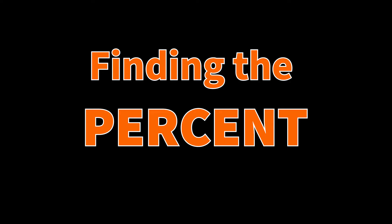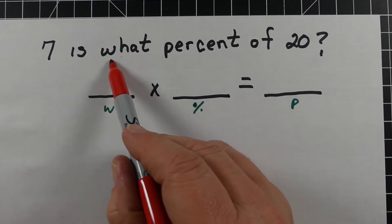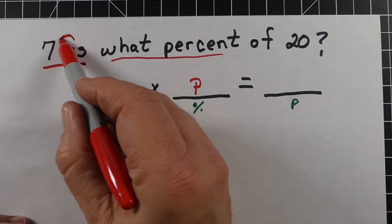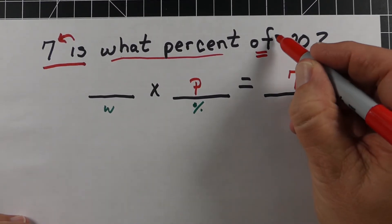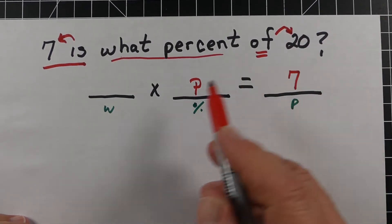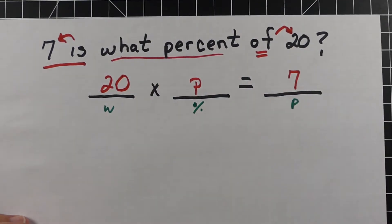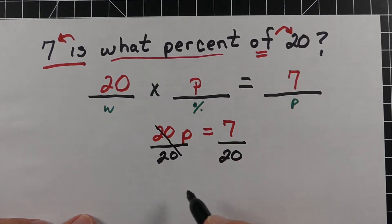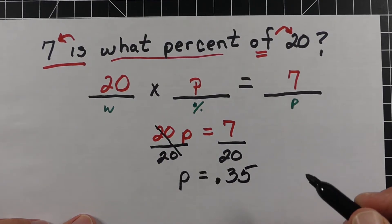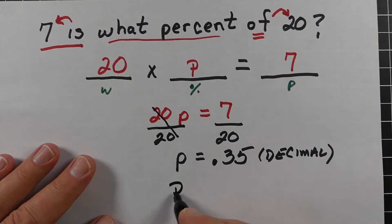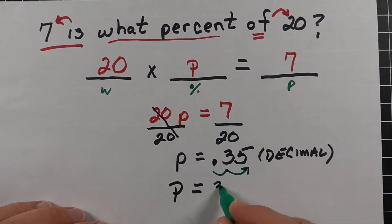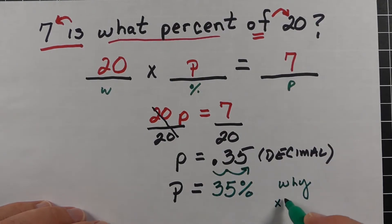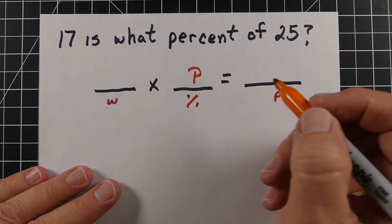The last situation is finding the percent. Problem: '7 is what percent of 20?' We put a variable P for the unknown percent. Using the 'is/of' clues, 7 is the part and 20 is the whole. We set up the one-step equation and divide both sides by 20 to get P equals 0.35. That's our percent as a decimal, so we move the decimal two places to the right — multiplying by 100 — to get 35%.